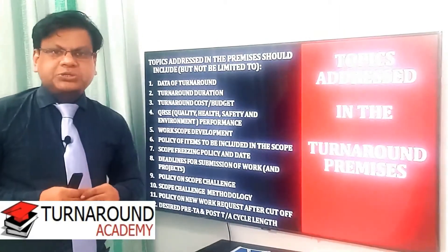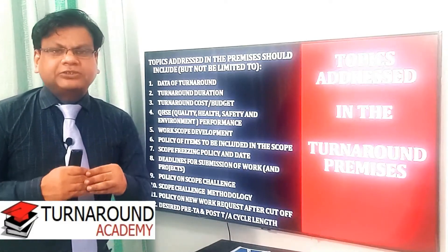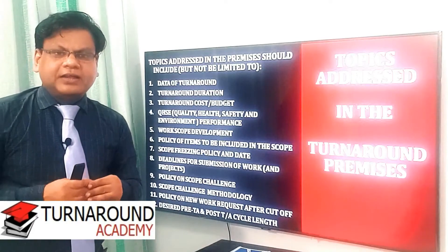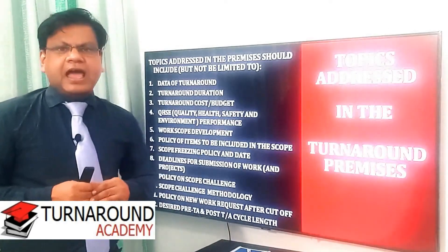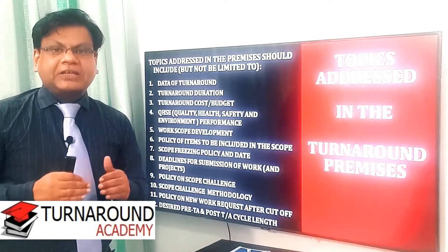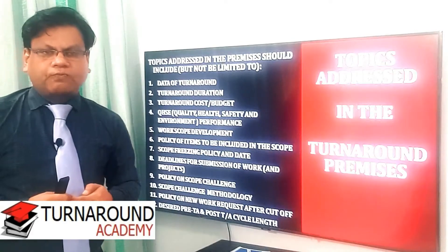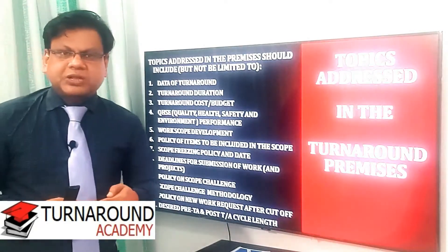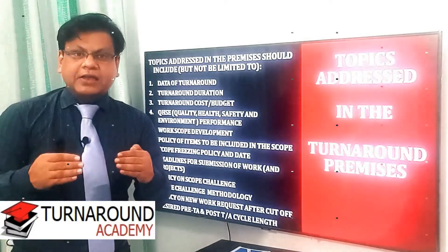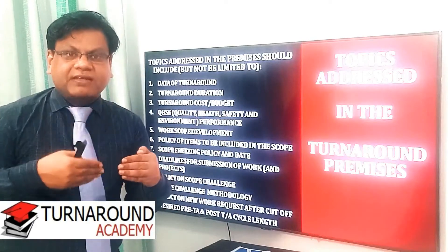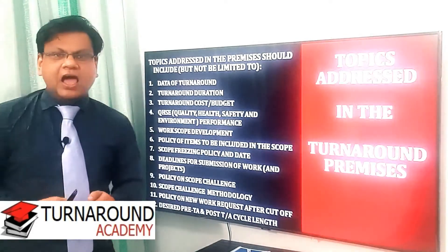Number eleven, policy of new work requests after the cutoff date — guidelines for what equipment or work requests need to be included in the turnaround after the cutoff date. Number twelve, pre-TA and post-TA cycle length — management provides guidelines on how long the pre-turnaround phase and post-turnaround phase will be. These twelve items are the minimum to consider; you may amend, delete, or add more points as per project requirements. Watch the entire video since all activities have a sequence.